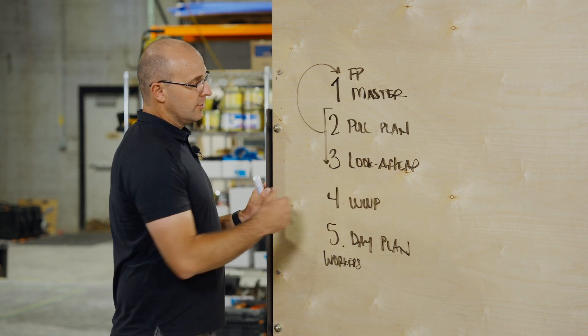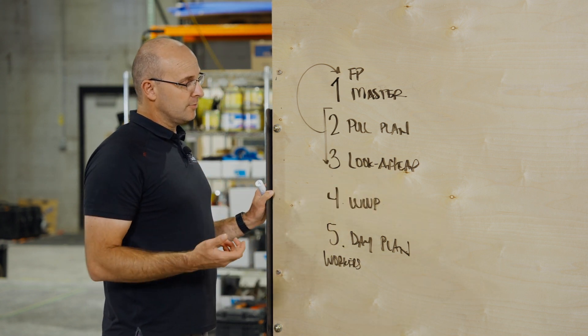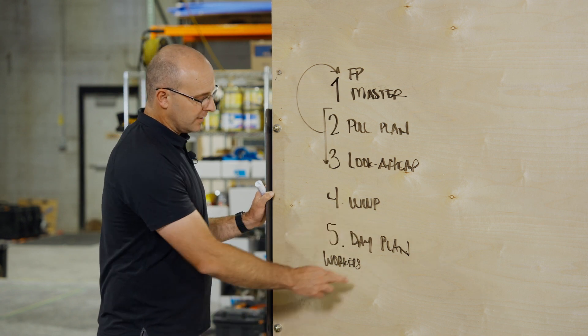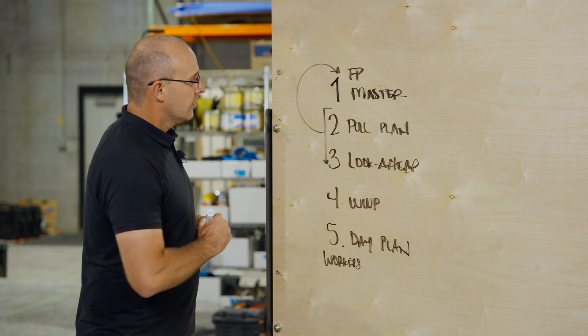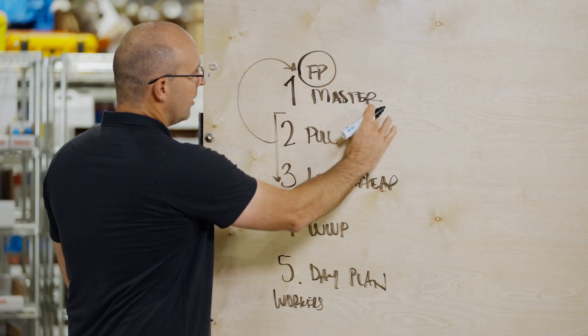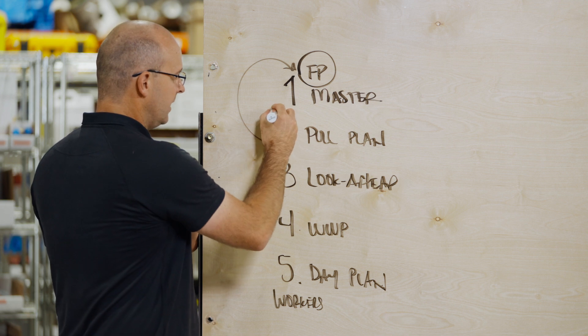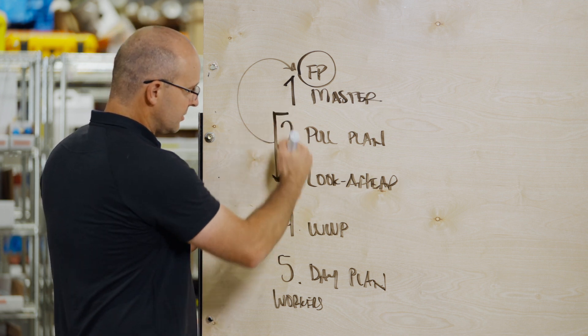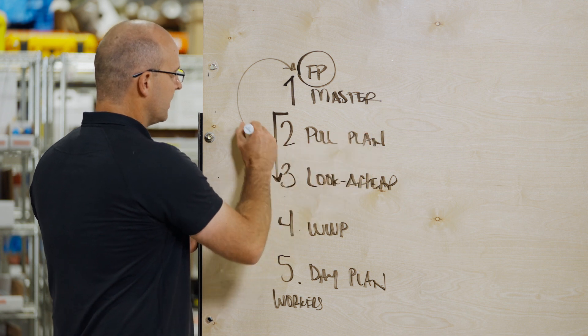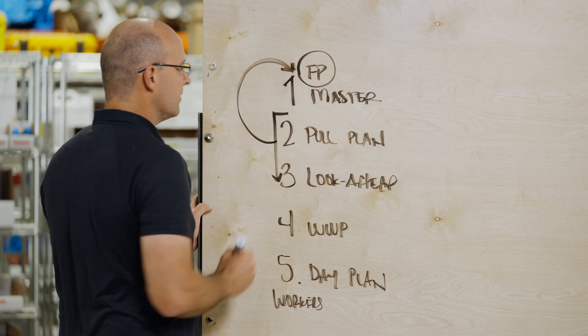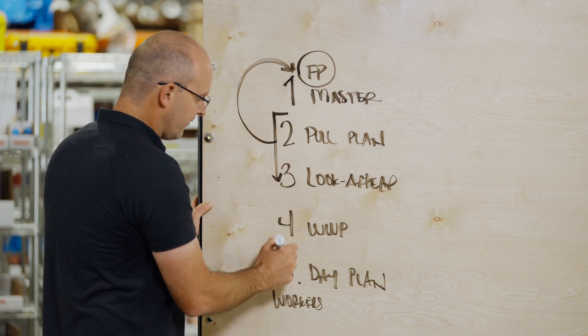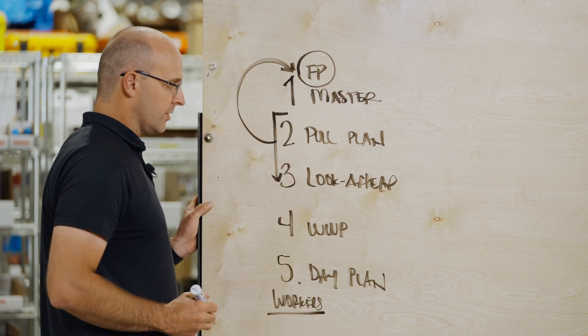Then your look ahead plan. Your look ahead will make sure that you're making work ready and allow you to remove roadblocks. Then your weekly work plan and your day plan. So right here, I've listed FP. Your first planners are involved with the master schedule. From here on down, this is your last planner involvement. Once you create those pull plans, that educates those sequences in your master schedule. And this one, two, three, four, five gets the information all the way to the workers.